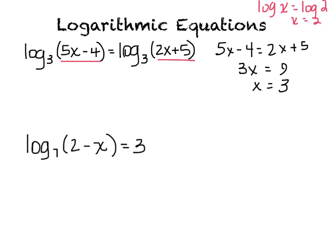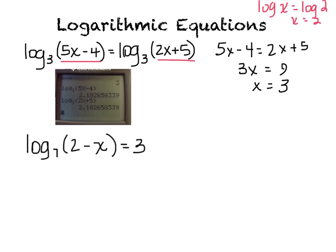I store 3 as x, use alpha window to type in my base and the expression 5x minus 4, press enter and get 2.8-something. I do the same for the right side and get 2.8-something as well, so 3 is confirmed as a solution.